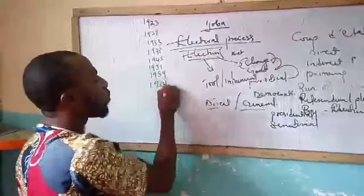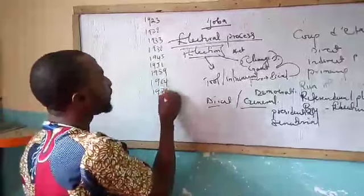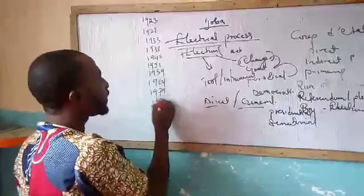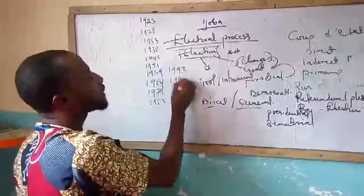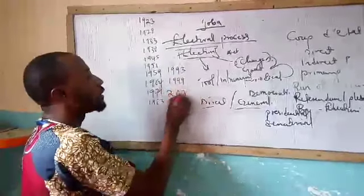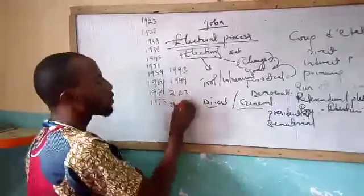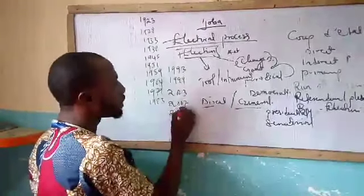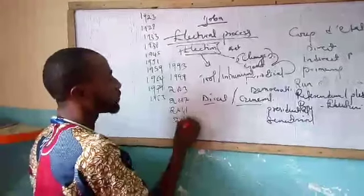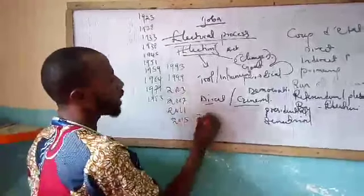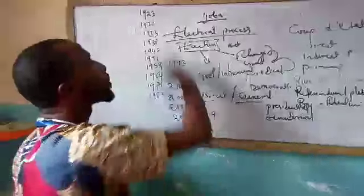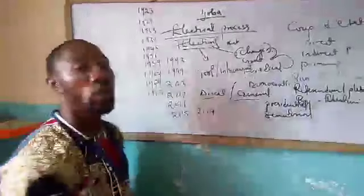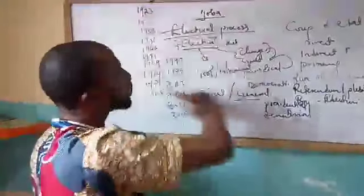Continuing Nigeria's general election history: 1964, 1979, 1983, 1993, 1999, and 2003. These are a series of general elections conducted in the history of Nigeria. That is the concept of direct election.